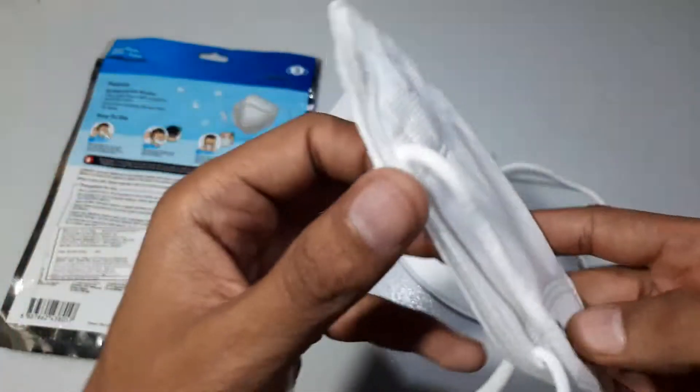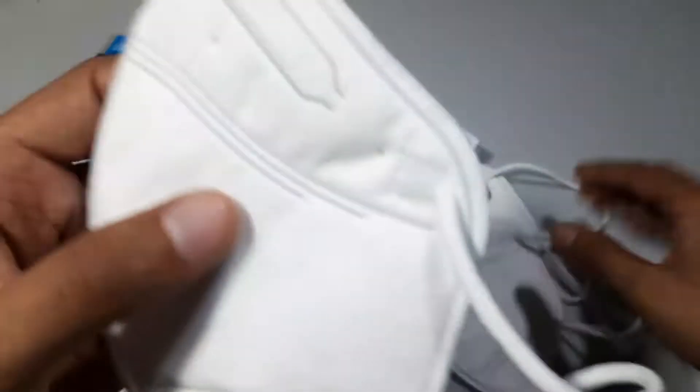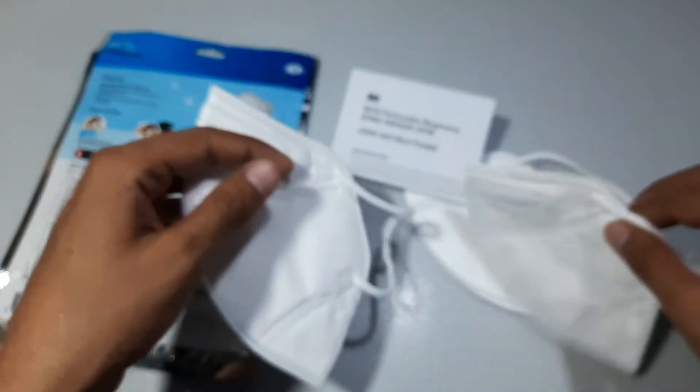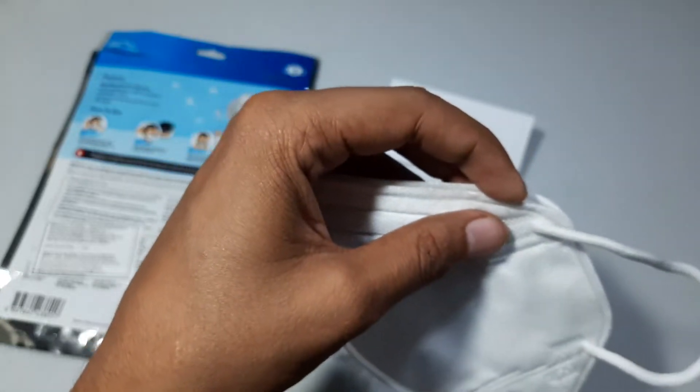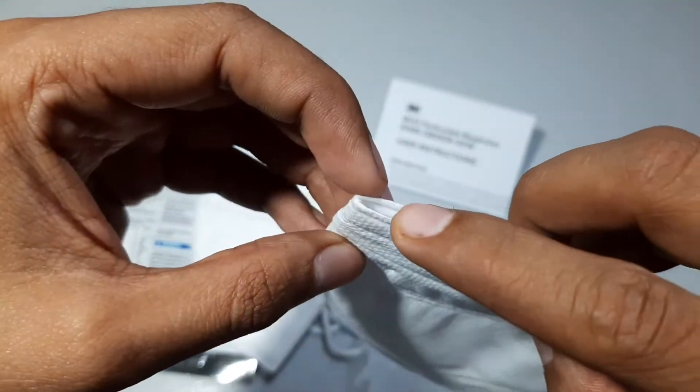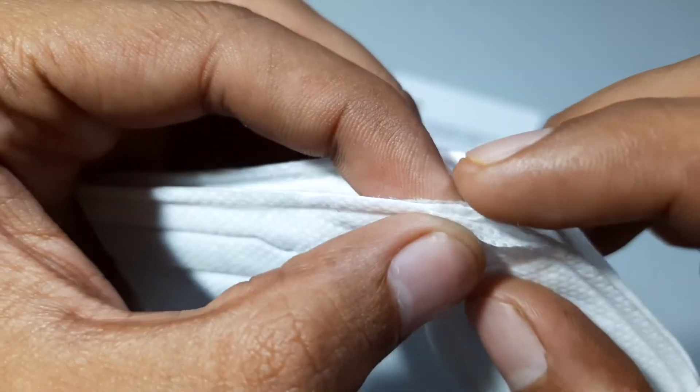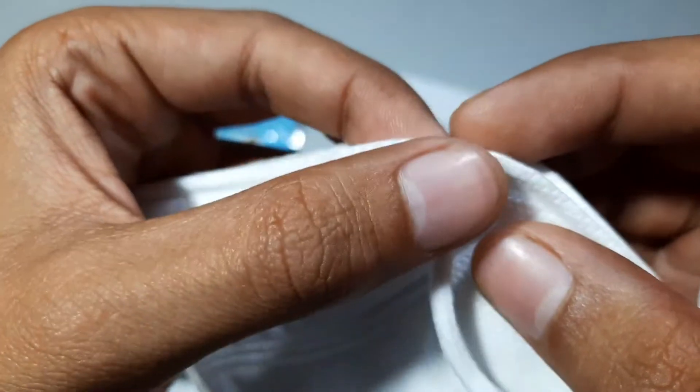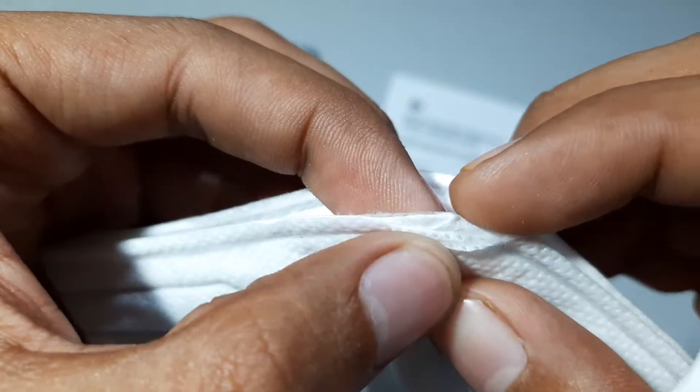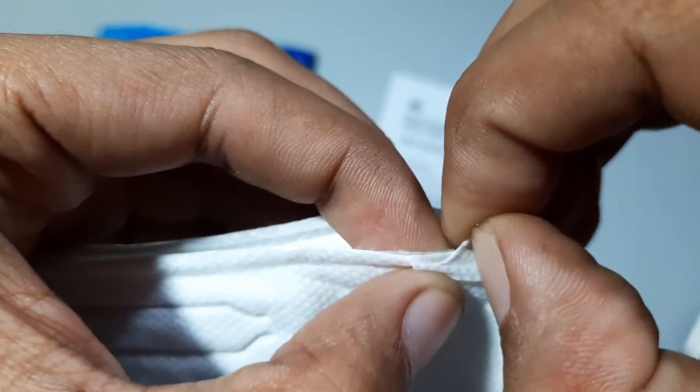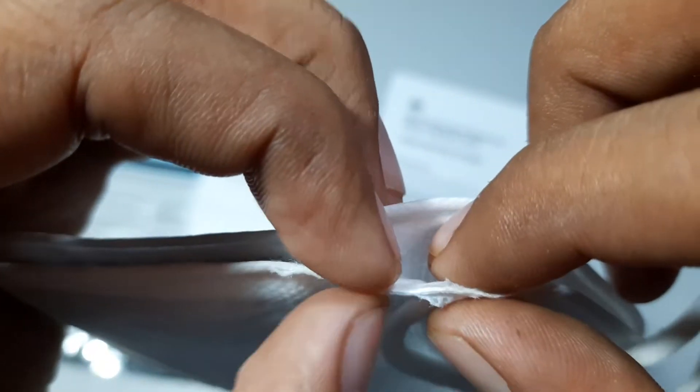At last we will check the quality of the filter. These masks are sealed from all the edges, so what you can do is cut a small section from a not so important part of your mask. From there you can see the melt blown fabric, the filter. You can see how thick that is. That's the thickness of the filter and I'll show you in comparison with other masks.